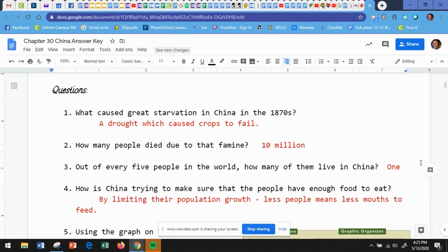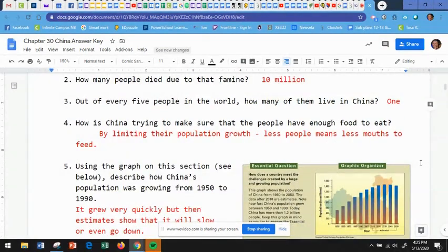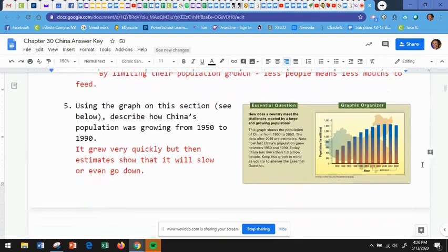Number four, how is China trying to make sure that the people have enough food to eat? By limiting their population growth. Less people means less mouths to feed. So they're trying to have less people in their country.